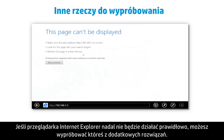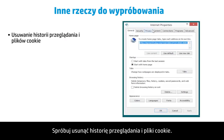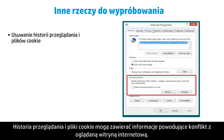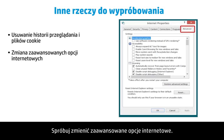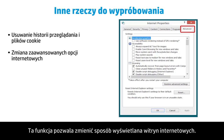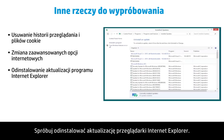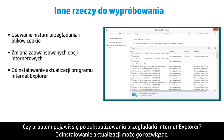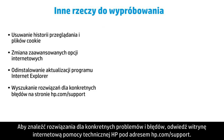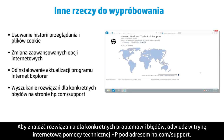If Internet Explorer is still not working properly, you might try some of these additional solutions. Try deleting your browsing history and cookies, as they may contain information that conflicts with the website you are viewing. Try changing Advanced Internet Options, which allows you to change the way websites are displayed. Try uninstalling an Internet Explorer update if the problem began after an update. To find solutions for specific problems and errors, check the HP Support website at hp.com/support.